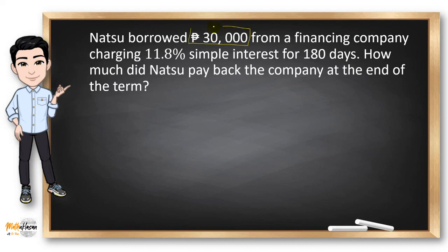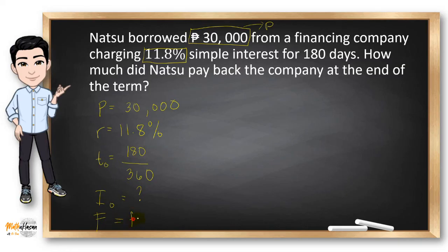So here, we can see that the principal amount is P30,000. The rate is 11.8%. Then, we have the number of days as 180. And since the type of interest was not mentioned, we will assume that this is an ordinary interest. So the time in an ordinary interest is 180 divided by 360. And now, we need to find the interest amount. But also note that this problem asks us about the total amount that Natsu paid the company at the end of the term. So in this case, we need F or the final amount.